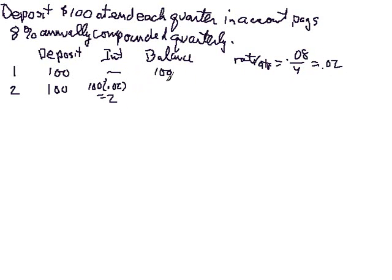So what's our balance going to be? We had $100 in there. We're now adding $2 interest, but we make a deposit here of another $100. So our balance is now $202.